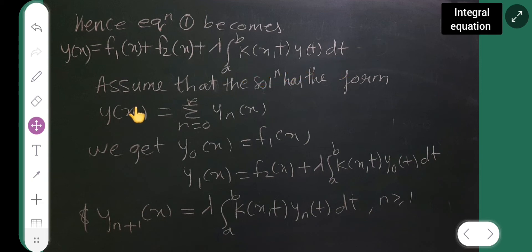Then you will have to assume that the solution has the form Y of X is equal to summation of N is equal to 0 to infinity Y of X. We get Y of X is equal to F1 of X. Earlier, it was Y of X is equal to F of X, right? Here, it has been split into two parts. Y naught of X is equal to F1 of X. And Y1 of X is equal to F2 of X plus Lambda integral from A to B, K of X, T, Y naught of T, DT.